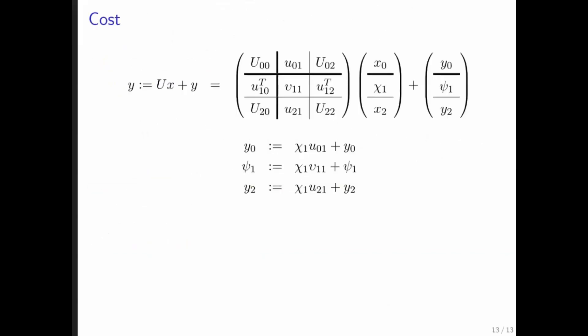Now you can do a cost analysis. We say this is k by k, this is 1, and this is n minus k minus 1. This operation is not performed. This is an AXP, but it's an AXP with this vector right here, which is of size k. So this takes 2k floating point operations, because that's the cost of an AXP operation with vectors of length k. This takes two operations.